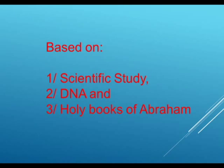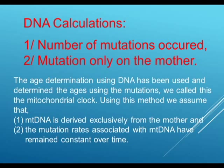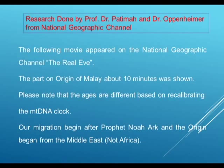Let us start by explaining the DNA age determination. DNA calculations are based on: one, the number of mutations occurred; two, mutations only on the mother's line. The age determination using DNA has been used, and ages are determined using the number of mutations — we call this the mitochondrial clock. Using this method, we assume that mtDNA is derived exclusively from the mother, and that mutation rates associated with mtDNA have remained constant over time. The research shown here was done by Professor Dr. Padma and Dr. Oppenheimer from the National Geographic Channel, in the documentary 'The Real Eve.'